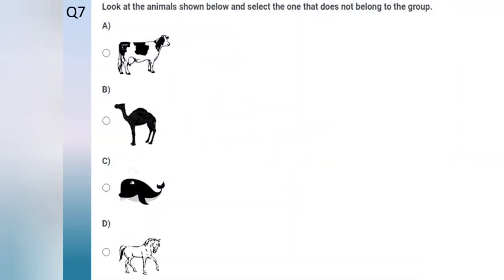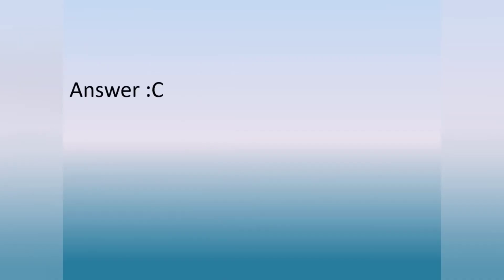Question number 7. Look at the animals shown below and select the one that does not belong to the group. The answer is option C.